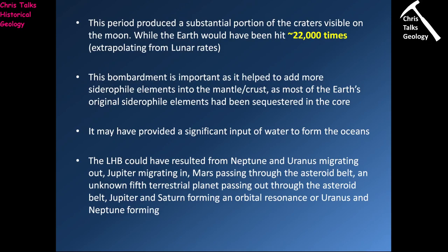This bombardment is important as it helps add siderophile elements to the mantle and crust. Siderophile means iron-loving, and when the earth first formed, these elements went with the iron-nickel alloy that formed the earth's core, stripping them out of the magma that formed the mantle and crust. Most of the siderophile elements we have in the upper mantle and crust were probably added during the Late Heavy Bombardment — all those meteorites and comets seeding the upper layers of the earth with additional siderophile elements.